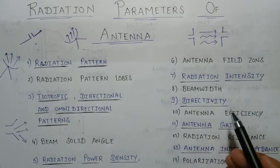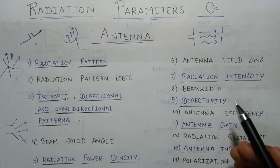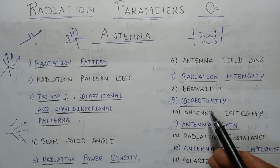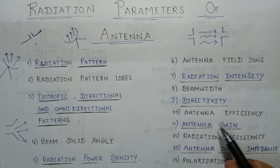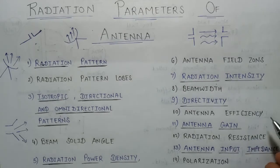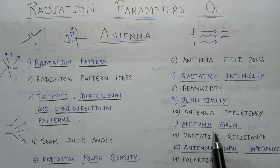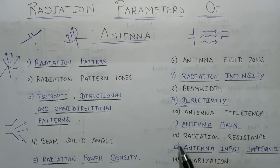In the ninth lecture we will talk about directivity, which is defined as the direction in which there is maximum radiation radiated by an antenna. In the tenth lecture we will talk about the efficiency of an antenna. In the eleventh lecture we will talk about the gain of an antenna and how to calculate it.